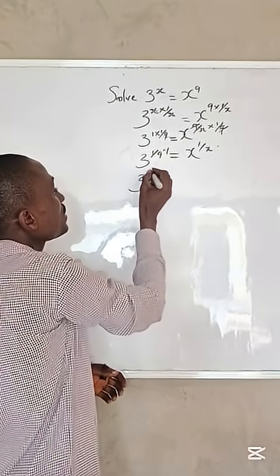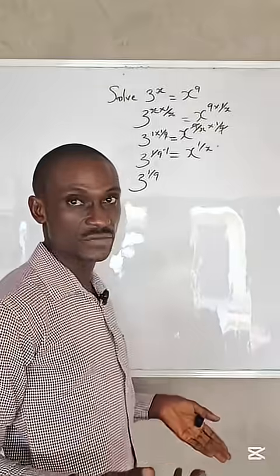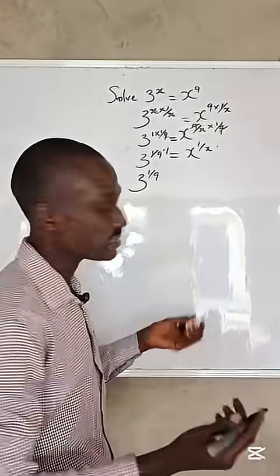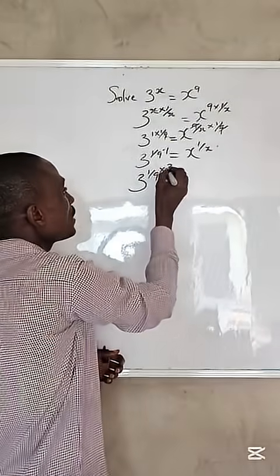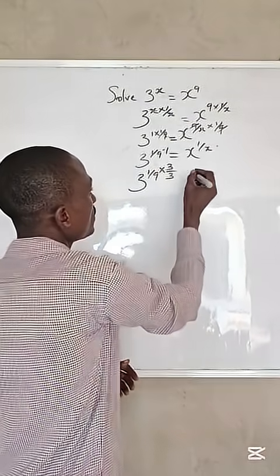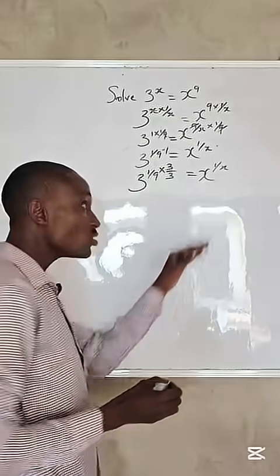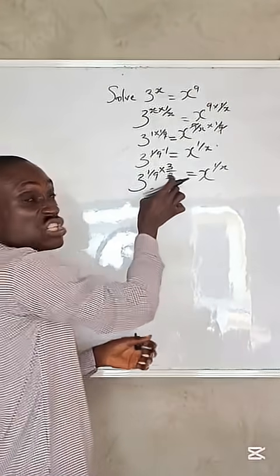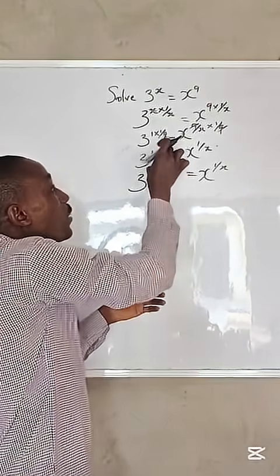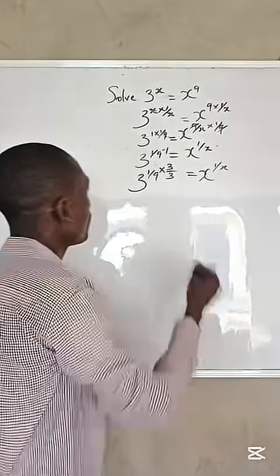From here, we can say 3 raised to the power of 1 over 9. Anything can give us 1, but since we are working with base 3, let's multiply by 3 over 3, equals x raised to the power of 1 over x. It doesn't affect this because we didn't change anything. We are only multiplying by 1.